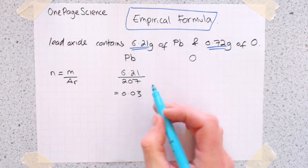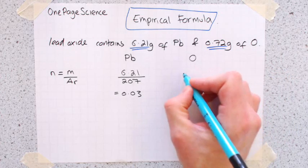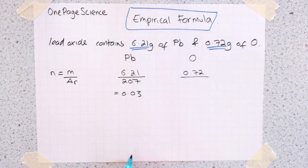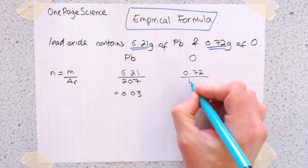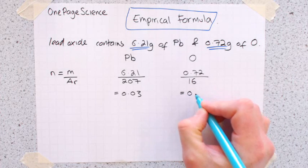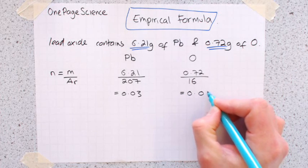And you do the same for oxygen, 0.72 grams. The relative atomic mass of oxygen is 16. Stick that in your calculator, and you get a value of 0.045.